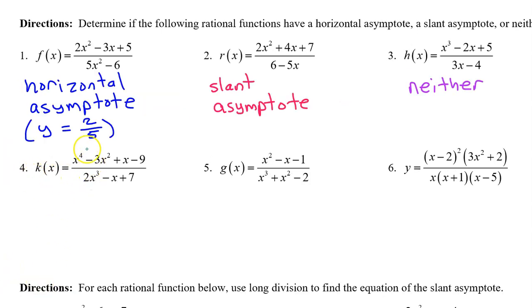Number four: the numerator degree wins by exactly one — four versus three — so there is a slant asymptote.